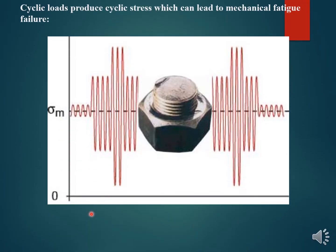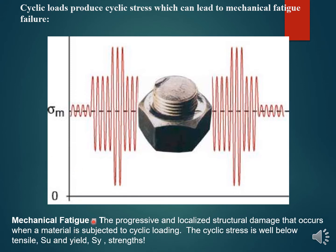Here is how cyclic loads produce cyclic stresses which can lead to mechanical failure of any component. If you see this component — the bolt — a cyclic load has been applied to it, and we can predict how mechanical failure is going to occur. Mechanical fatigue is the progressive and localized structural damage that occurs when a material is subjected to cyclic loading where the cyclic stress is well below the tensile strength.